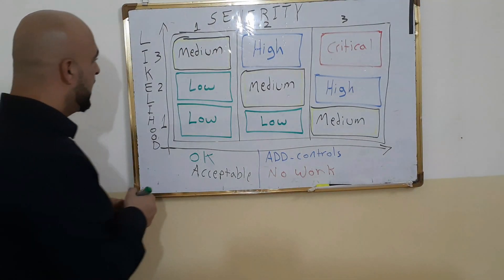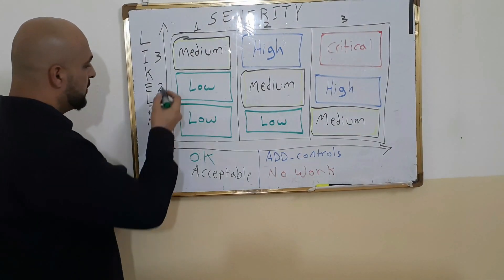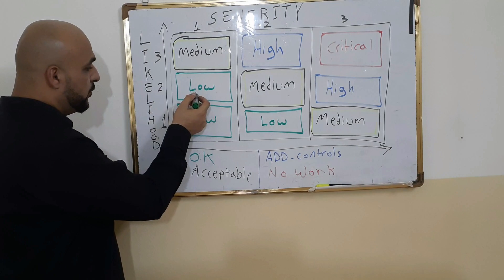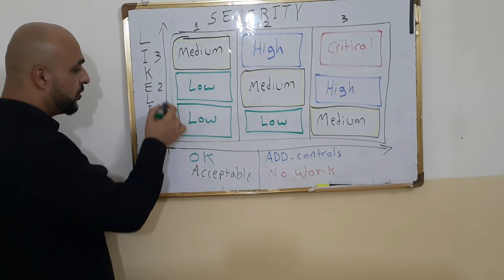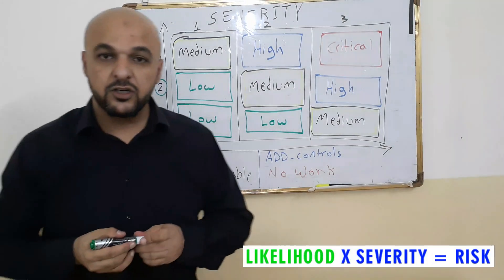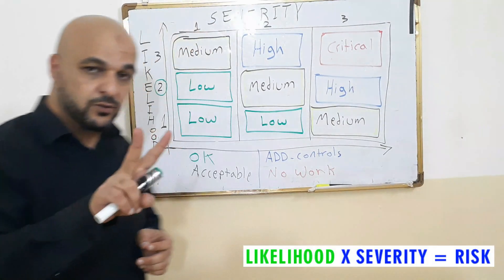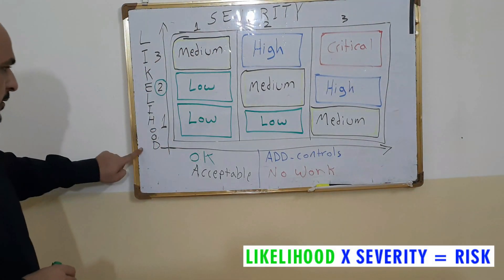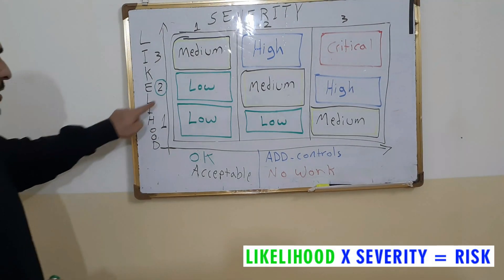So how likely is it for him to fall? I would say it is still low, but it's higher than before. So I would say it is two. Two. The likelihood of his fall is two. Likelihood of his fall is two.